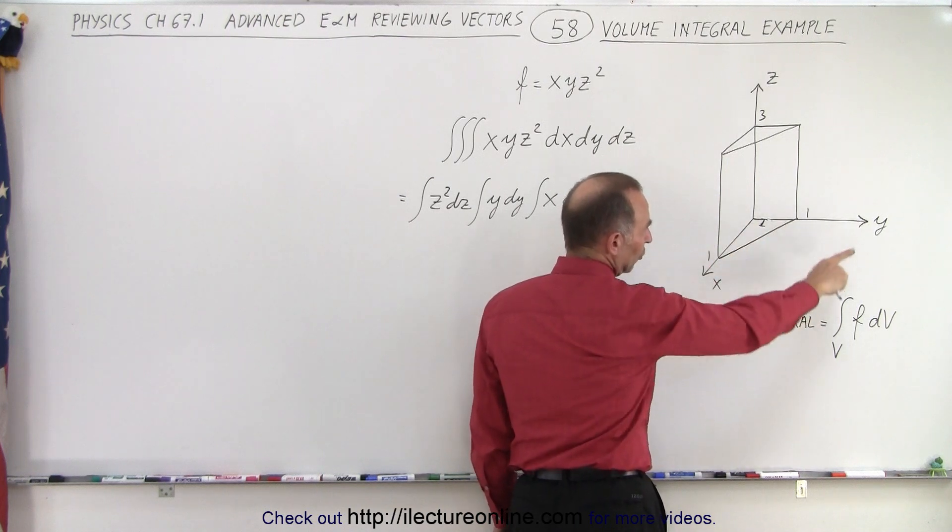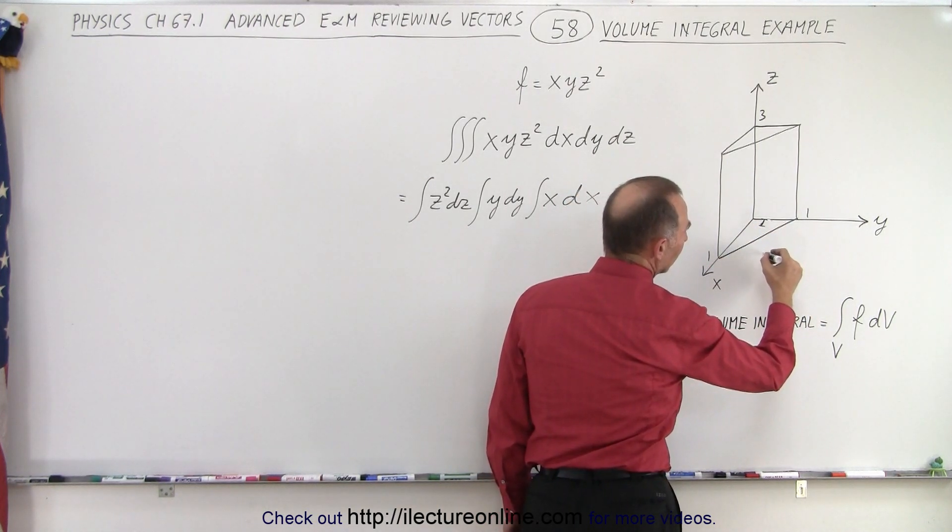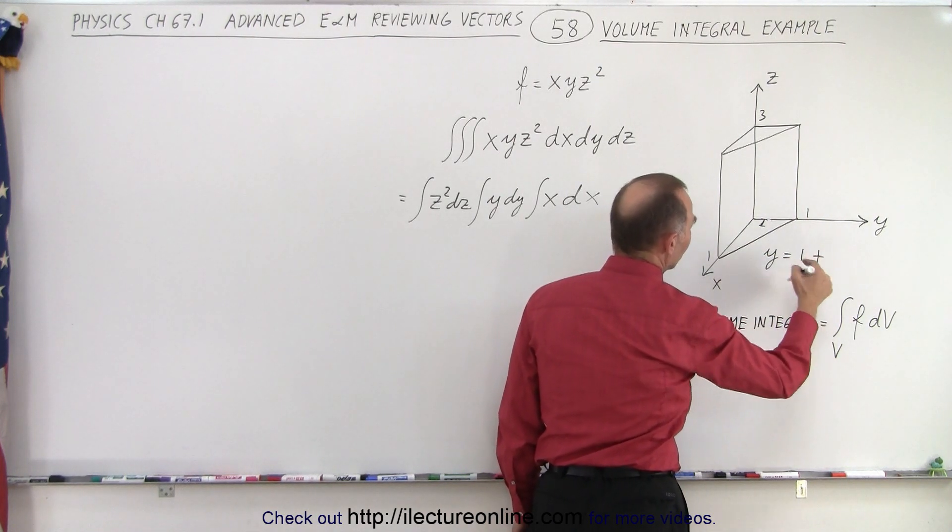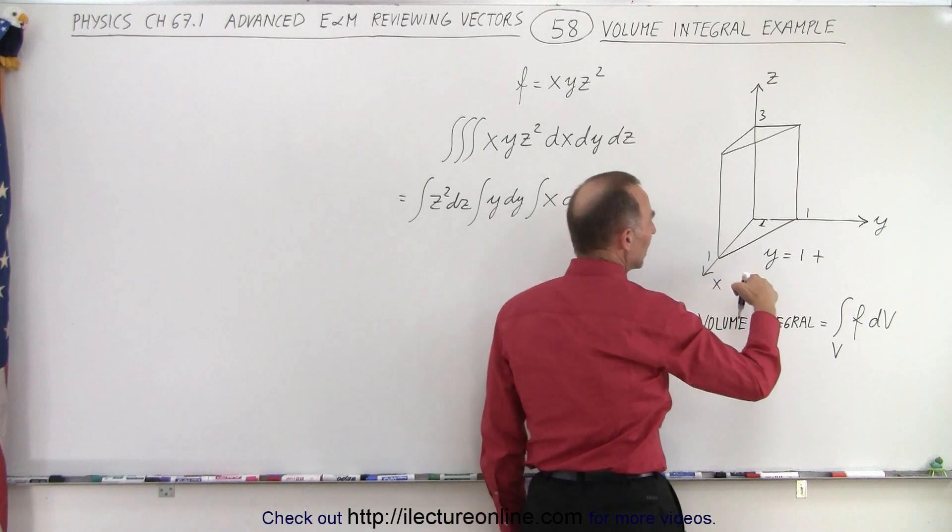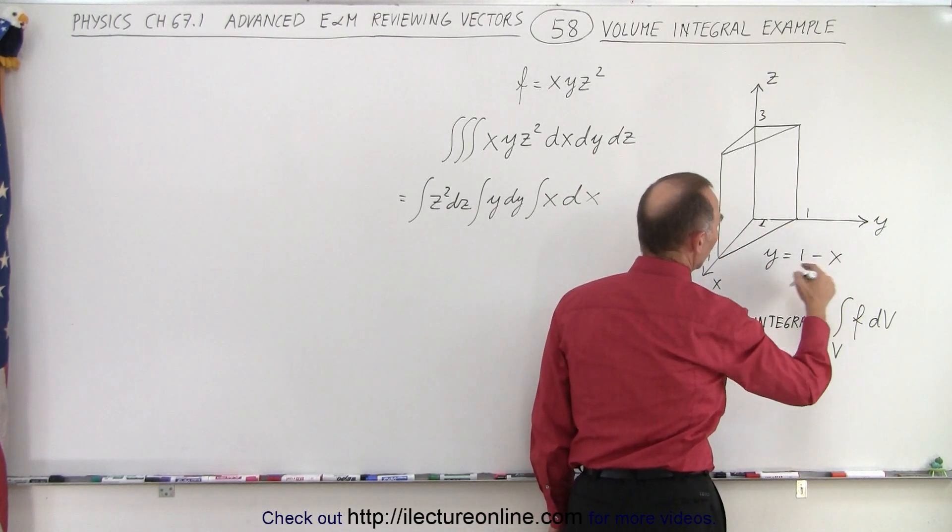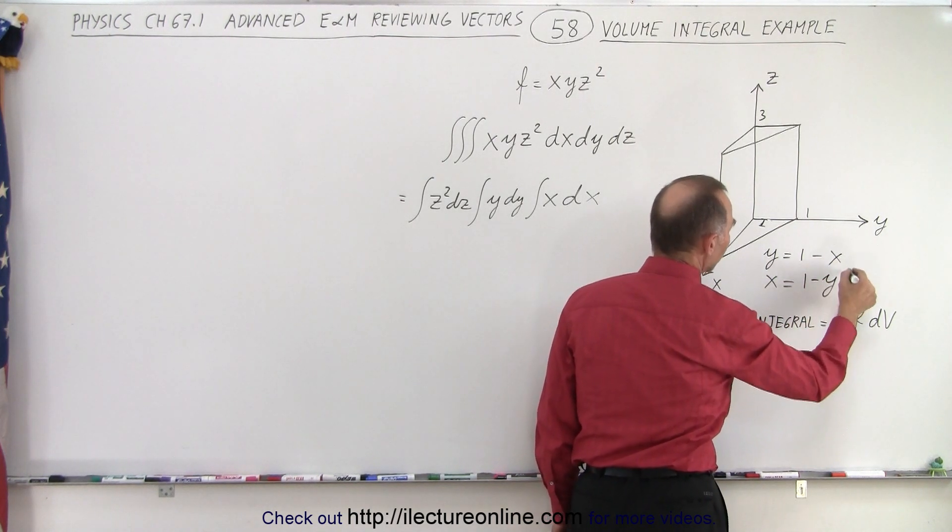And this line can be defined as, if you think about this as a two-dimensional straight line, we can say that y is equal to the y-intercept, which is 1, plus the slope, which would be, well, in this case the slope would be negative 1, so it would be minus x. So y is 1 minus x, or x is equal to 1 minus y.